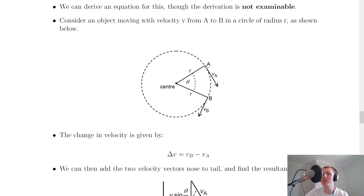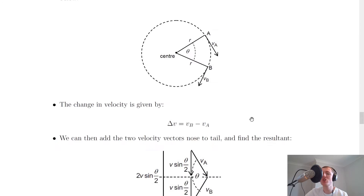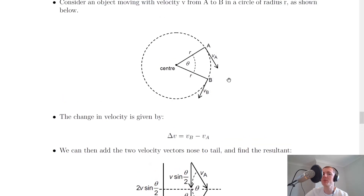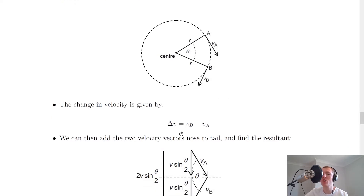If we consider the velocity at point A to be velocity VA — this is our tangential or linear velocity coming off from point A in a straight line — and the velocity at point B to be VB, then we can write the change in velocity as delta V equals VB minus VA. So the change in velocity between these two points is going to be the velocity at B minus the velocity at A.